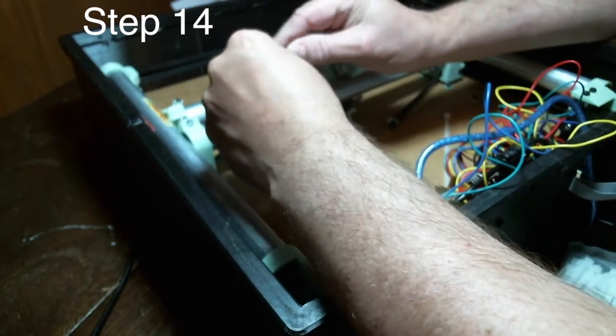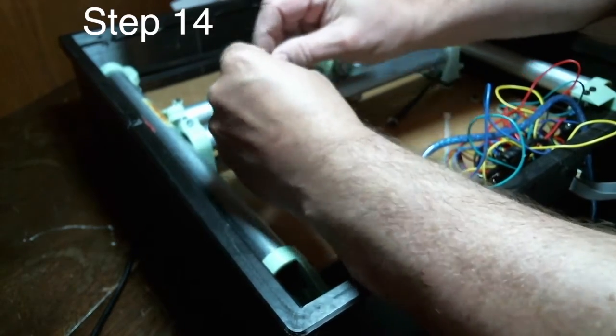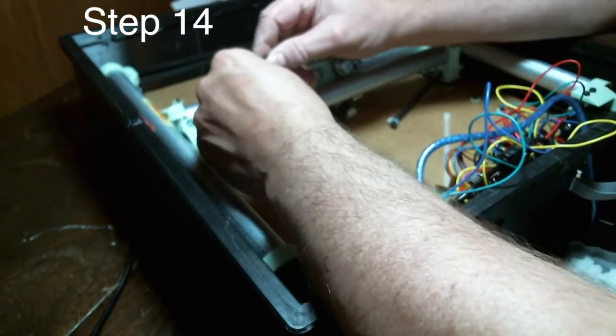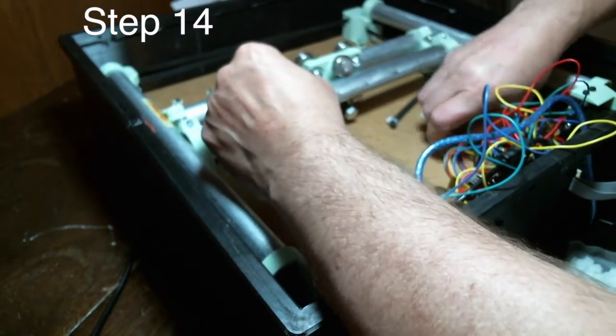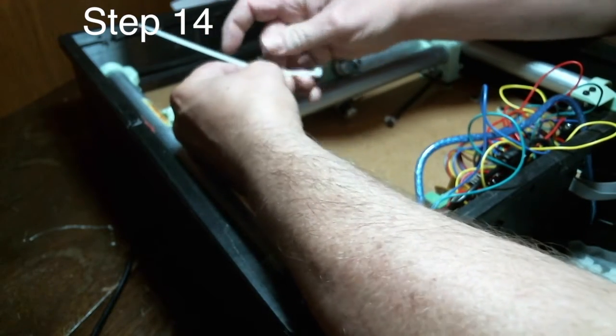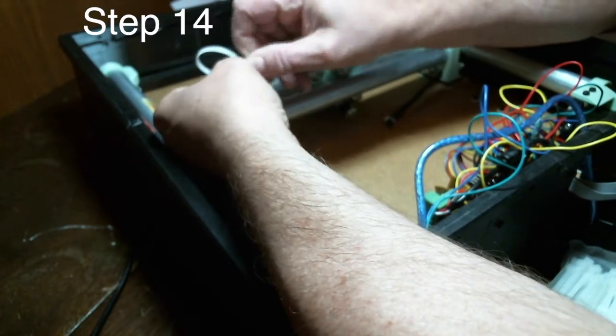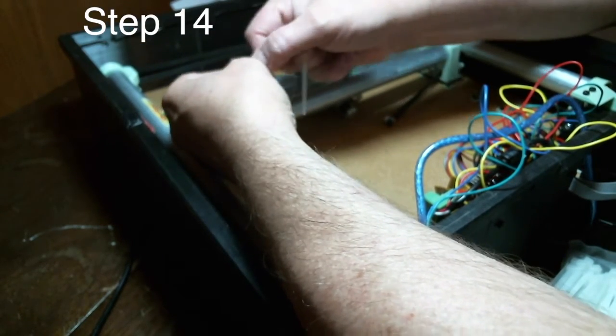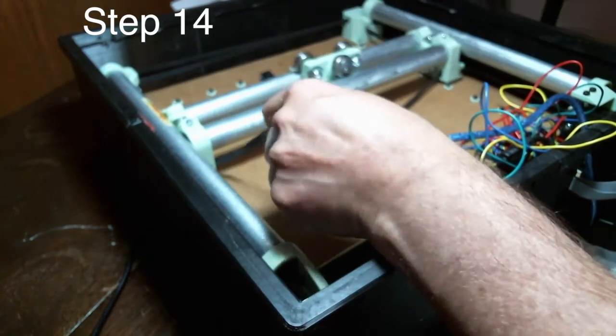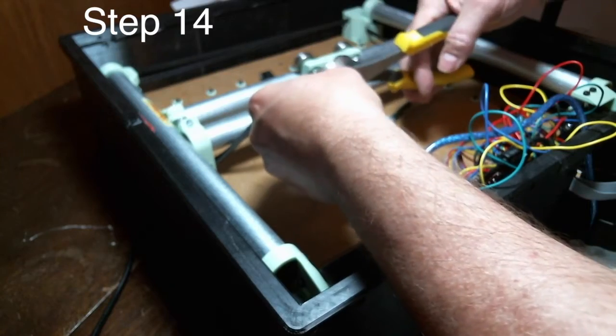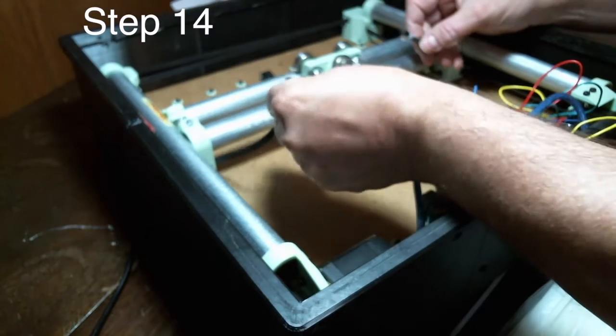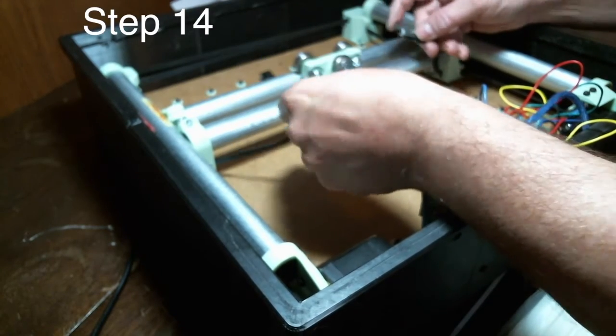Right over here we're going to do the same thing on this side. We're just going to make a loop and have the teeth grip back into itself here, and we're going to squeeze those teeth together with another wire tie. And we'll cut that guy off.